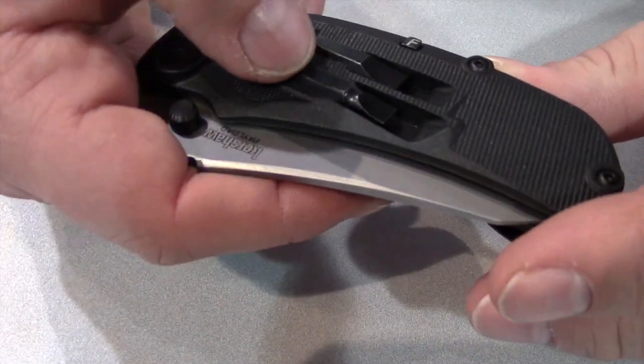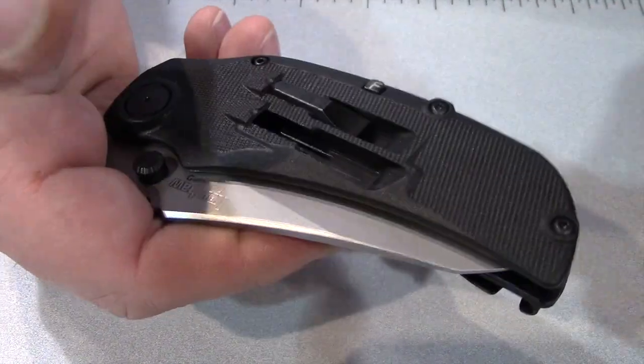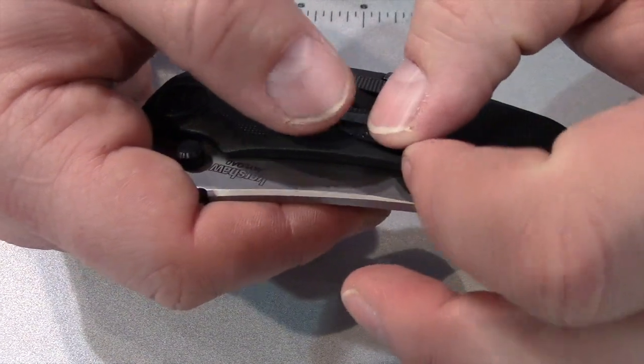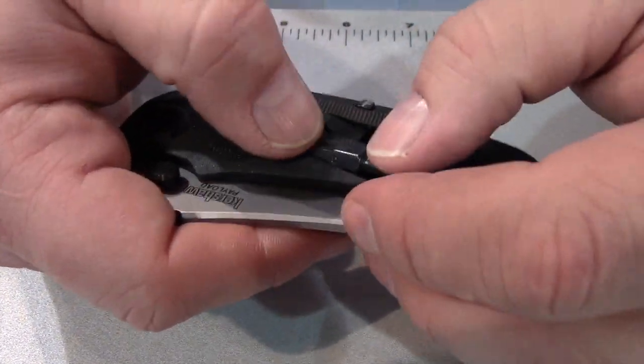When you take the bits out, you just push it out this way, slides out, and you can change your bits accordingly. It comes with number one and two slotted drives and number one and two Phillips loaded in the handle.